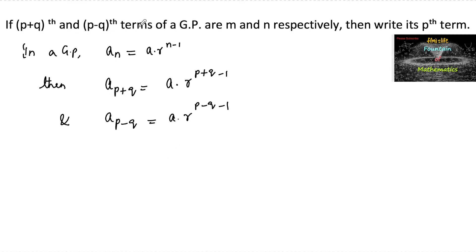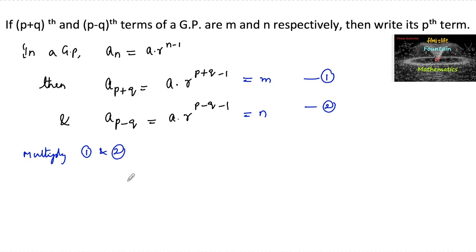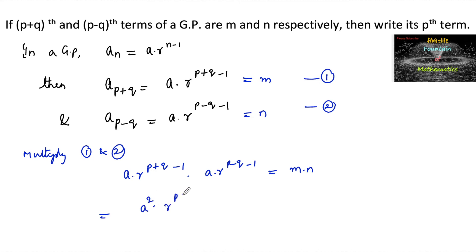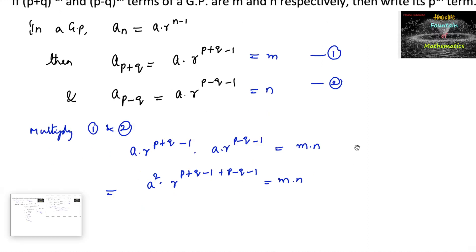These terms of the GP are respectively m and n, so a_(p+q) = m and a_(p-q) = n. Call these equation 1 and equation 2. Multiplying equations 1 and 2: a · r^(p+q-1) · a · r^(p-q-1) = m · n, which gives a² · r^(p+q-1+p-q-1) = mn.